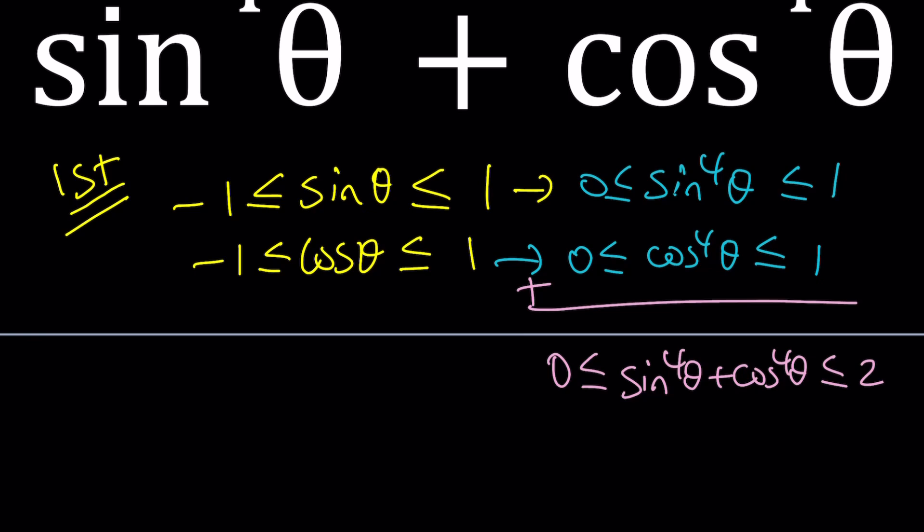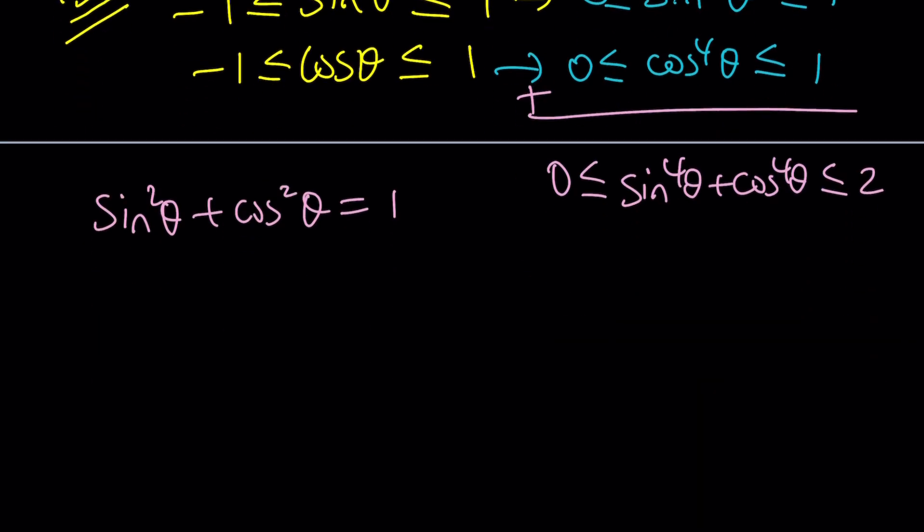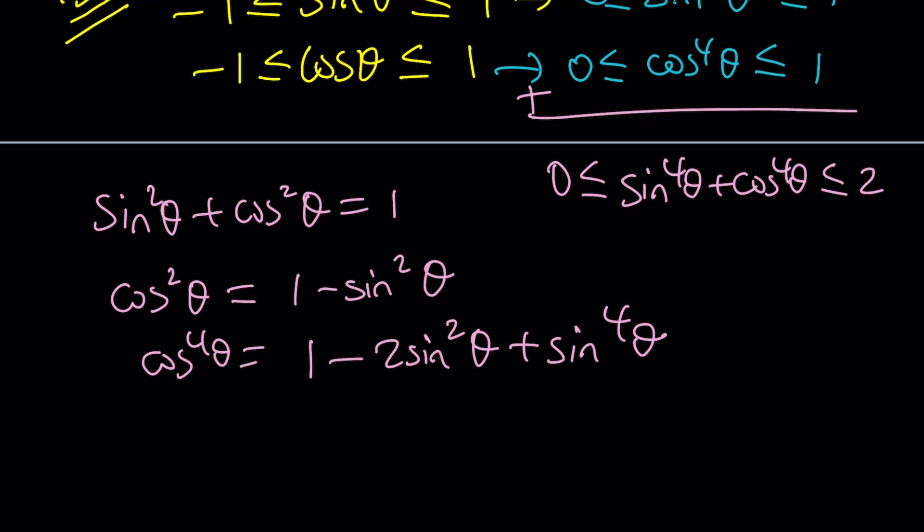Well, you can add inequalities, but the problem is these functions are not independent. Because we have the Pythagorean theorem, sin²θ + cos²θ = 1. We can kind of isolate one of these from here. When you look at the values, things are going to be a little different because the value of cos⁴θ basically depends on the value of sin²θ. Make sense?